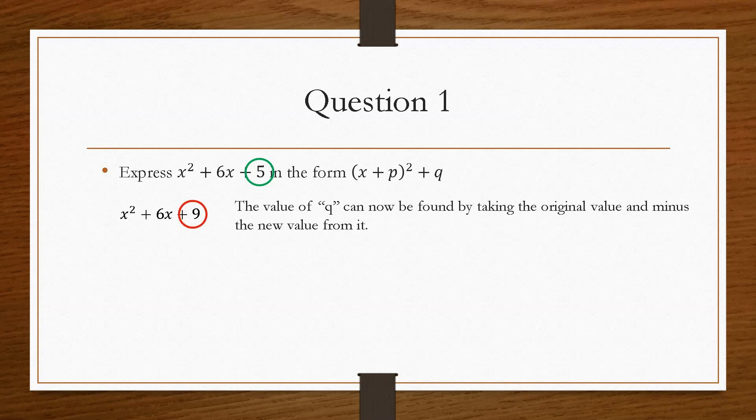The 5 is the original value, and the 9 that we created is the new value. So it's literally a case of 5 take away 9, so q is minus 4.